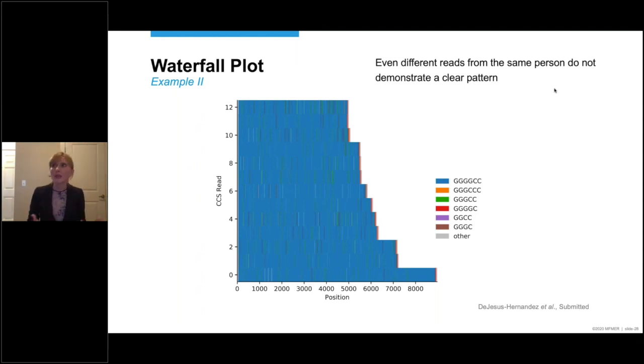And we said, well, maybe these interruptions are not real. Or at least a subset of these interruptions are not real. And they may represent rare sequencing errors. Which is not surprising, given the fact that this is a very long, repetitive, and GC-rich expansion.